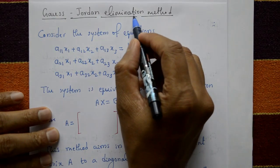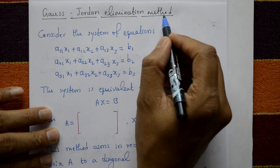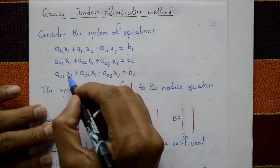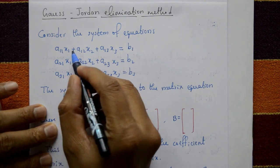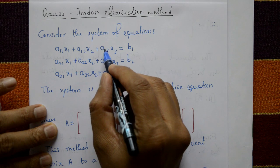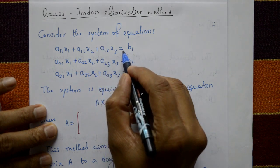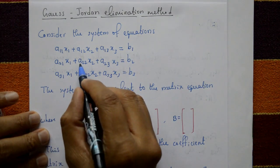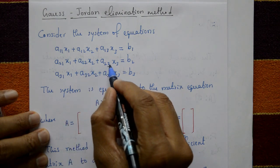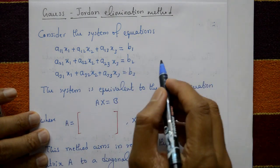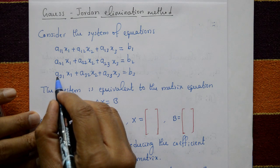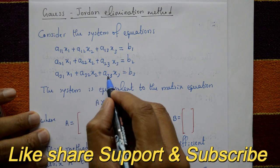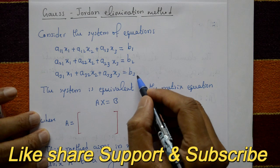Gauss-Jordan elimination method. Consider the system of equations: a11·x1 + a12·x2 + a13·x3 = b1 (first equation), a21·x1 + a22·x2 + a23·x3 = b2 (second equation), a31·x1 + a32·x2 + a33·x3 = b3 (third equation).